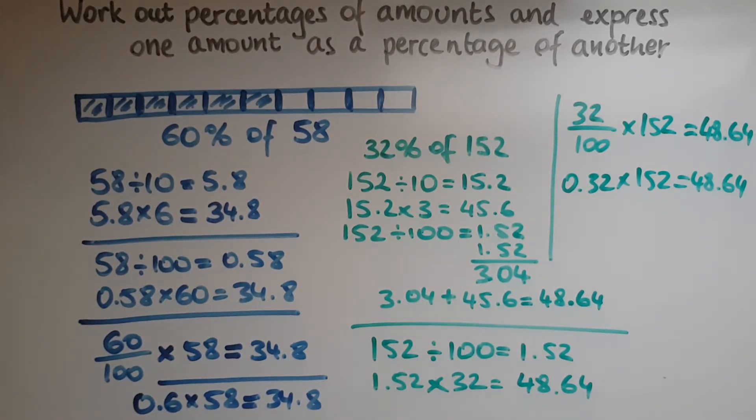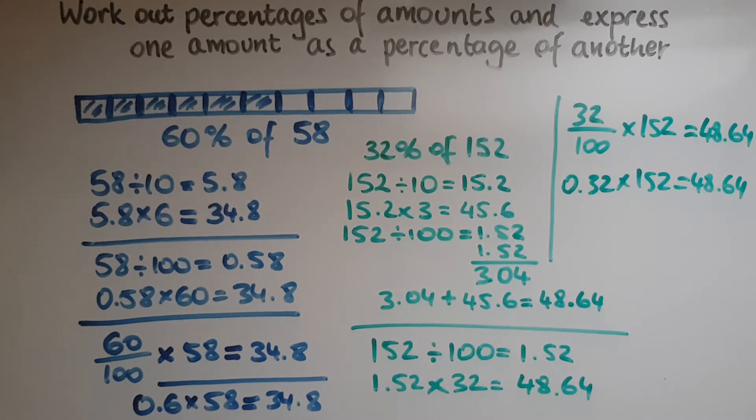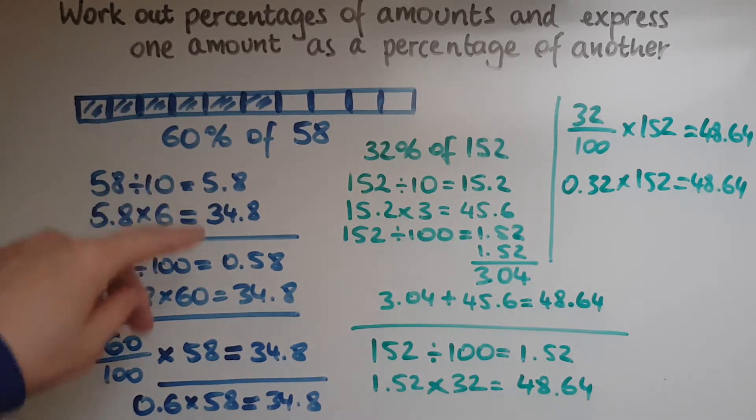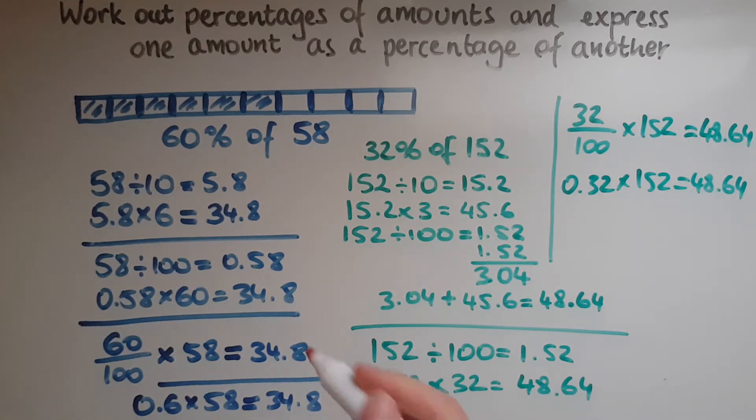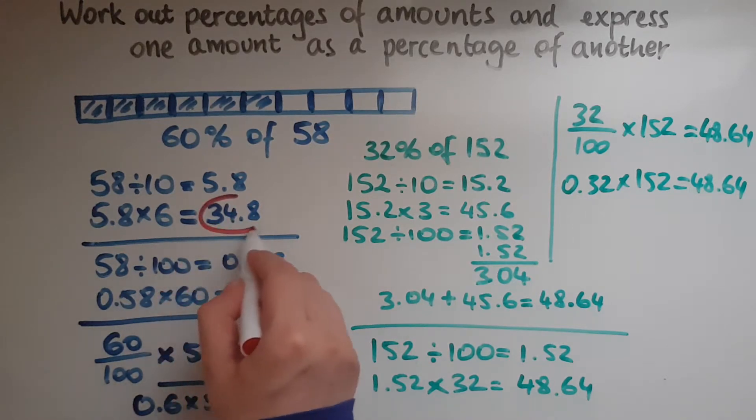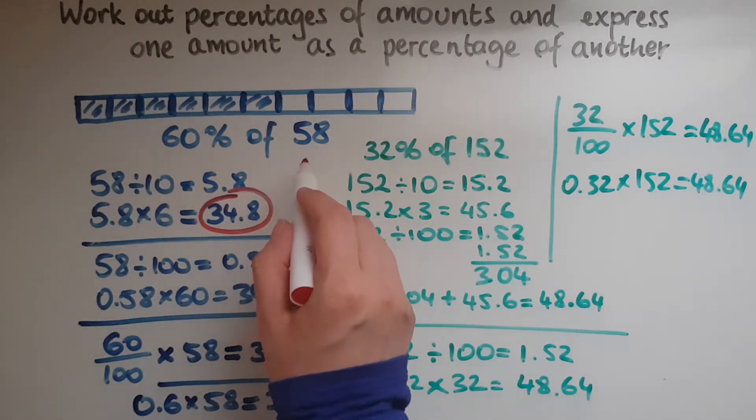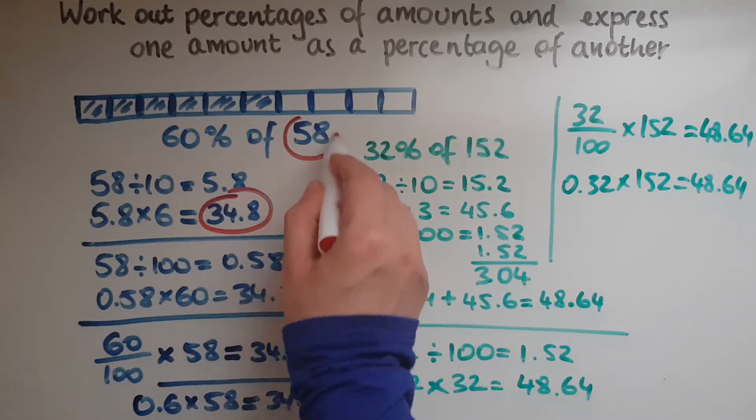Now let's express these amounts as a percentage of 58 and 152. So let's take the first example first. So it was 34.8 out of 58.